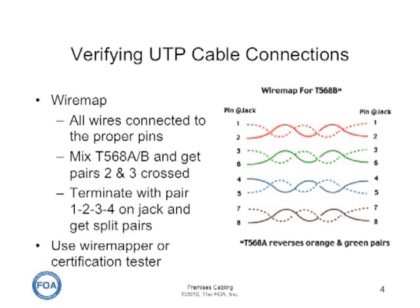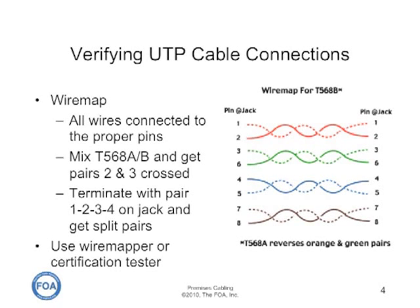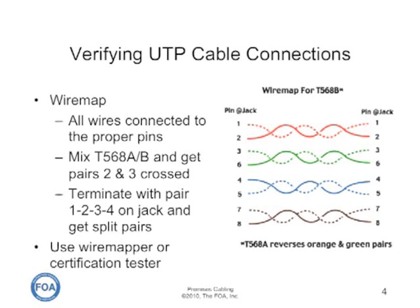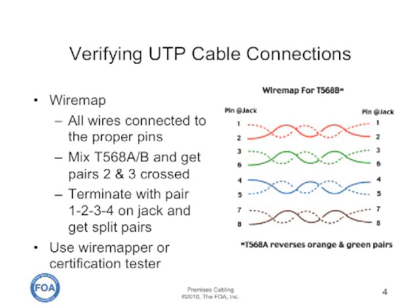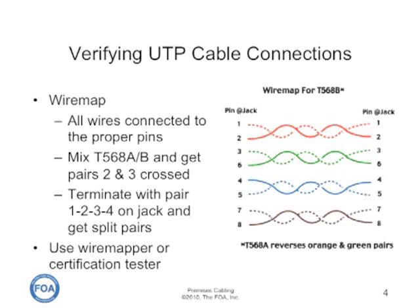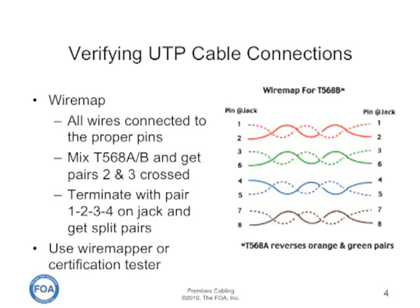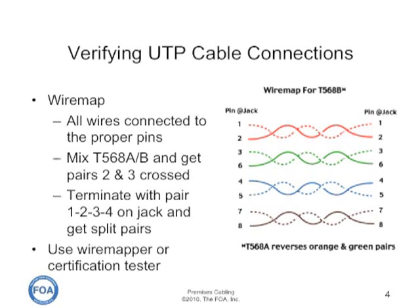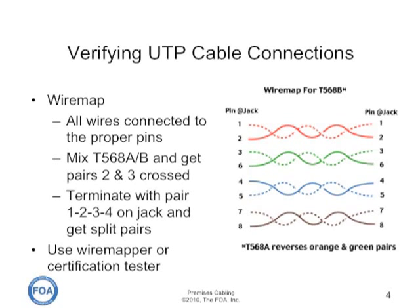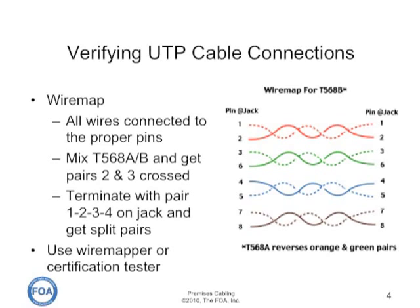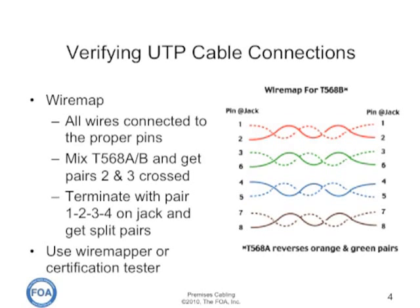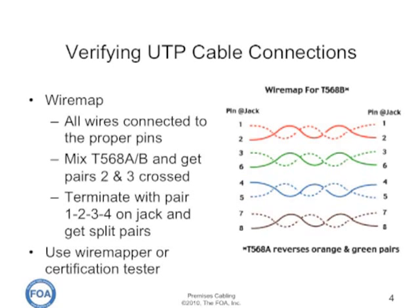Wire mapping is simply testing to make sure that all the wires are connected to the proper pins. If you don't get it correct, there are some common faults. For example, terminating one end as T568A and the other as T568B, so you get pairs two and three crossed. Or terminating a pair on a jack with the 1-2-3-4 connection scheme used for punch down blocks, and you get split pairs. Most certification testers and verification testers, as well as all wire mappers, will do a wire map as the first test in a test sequence.